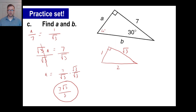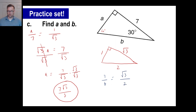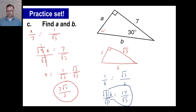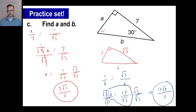For B: set up 7 to B is square root of 3 to 2, so 7 over B equals square root of 3 over 2. Cross-multiplying: square root of 3 times B equals 14, so B equals 14 over square root of 3. Rationalize by multiplying square root of 3 over square root of 3 to get 14 square root of 3 over 3. If you're adventurous, you can also use the Pythagorean theorem to find that last side. See you guys next time, have a good day.